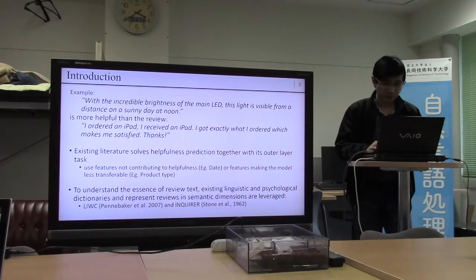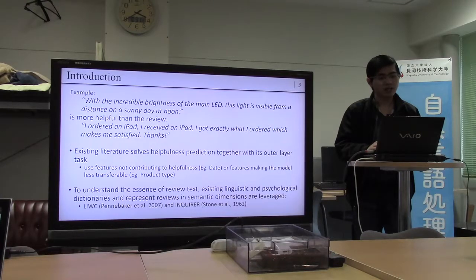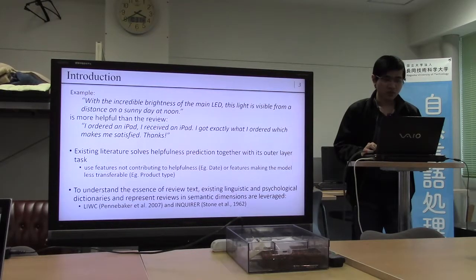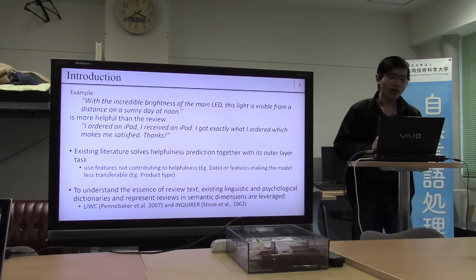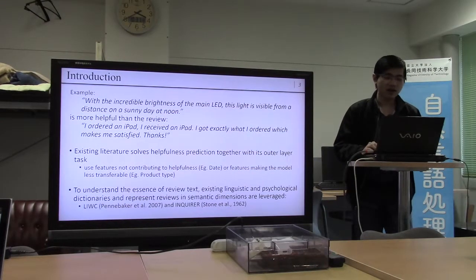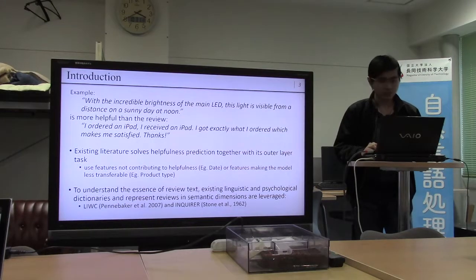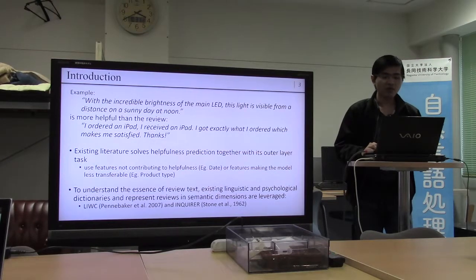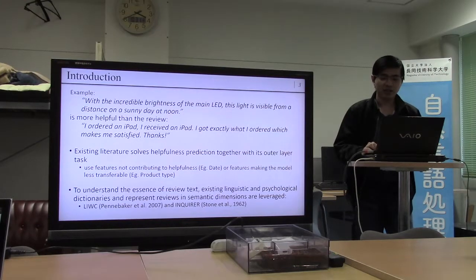例えば、この2つのレビューで、上のレビューは下のレビューより情報が有用であることをわかります。そして、既存の文献はその外相タスクと共に有用性予測を解決することです。これが有用性に起用しないこと。例えば、デイスまたは、モデルのチョートが困難になる機能を使用しました。